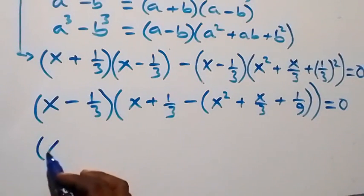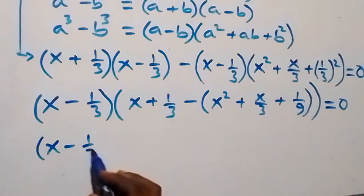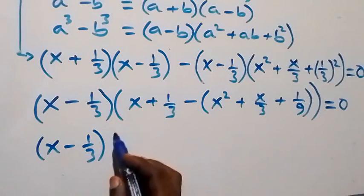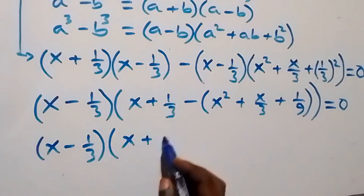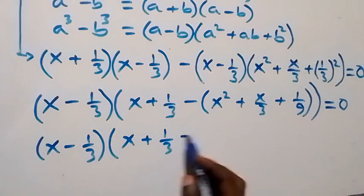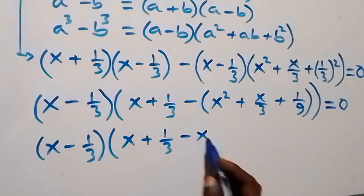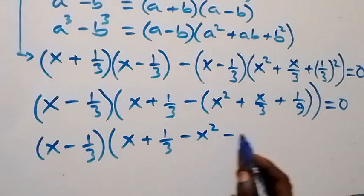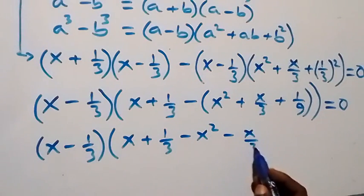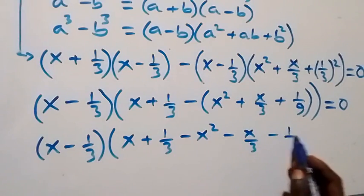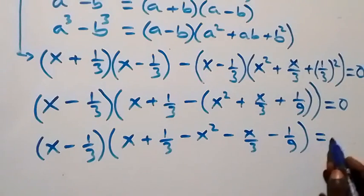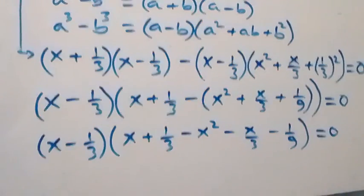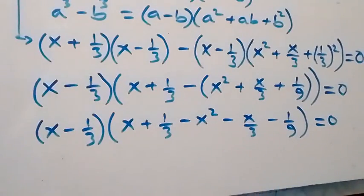When we simplify and open the bracket, we have (x − 1/3) times bracket (x + 1/3) minus x squared minus x over 3 minus 1 over 9, close bracket, equals zero.